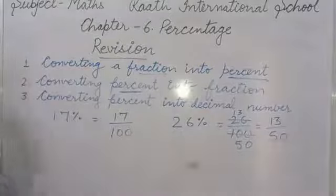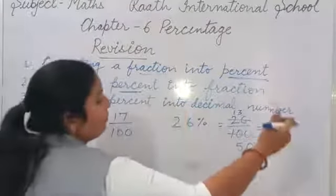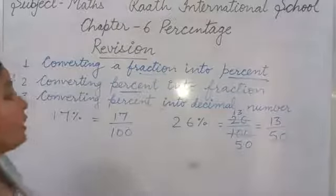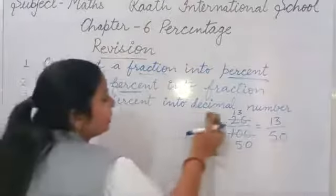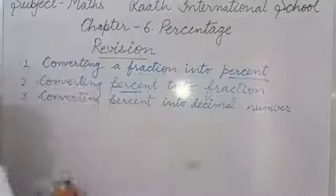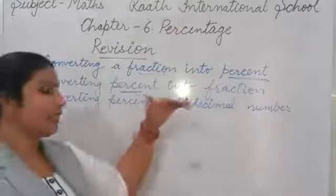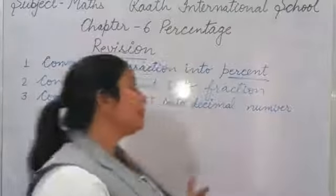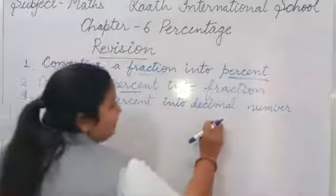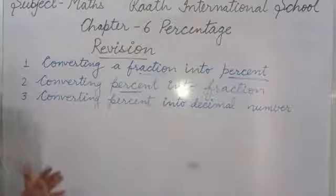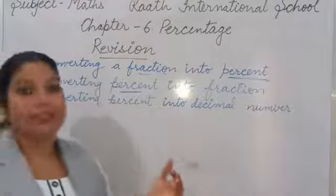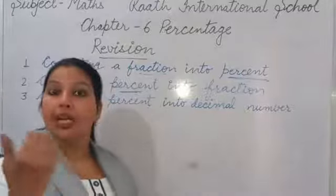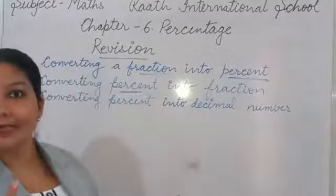Now our third topic: converting percent into decimal number. We know percent means out of 100. The same policy follows here also. Whenever we have percent to convert into decimal, we first convert percent into fraction form — remove the percent symbol and take denominator as 100. Then from the fraction we convert into decimal form.